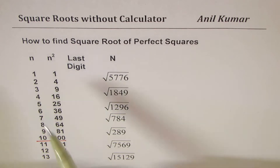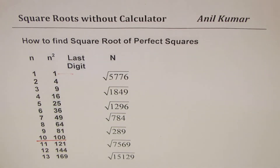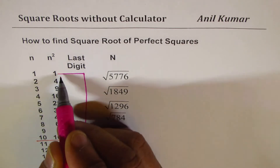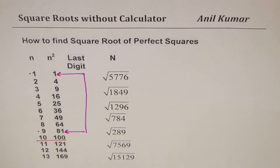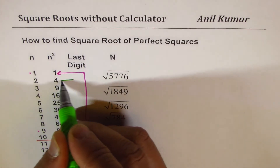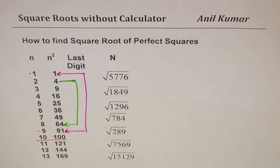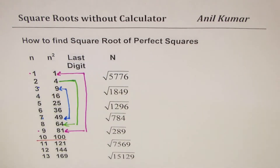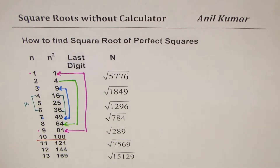What you notice is that the last digit is repeated for two different numbers. Last digit 1 appears for both 1 and 9, and 1+9=10. Last digit 4 appears for 2 and 8, and 2+8=10. Last digit 9 appears for 7 and 3, and 7+3=10. There is a pattern — the pairs always sum to 10.